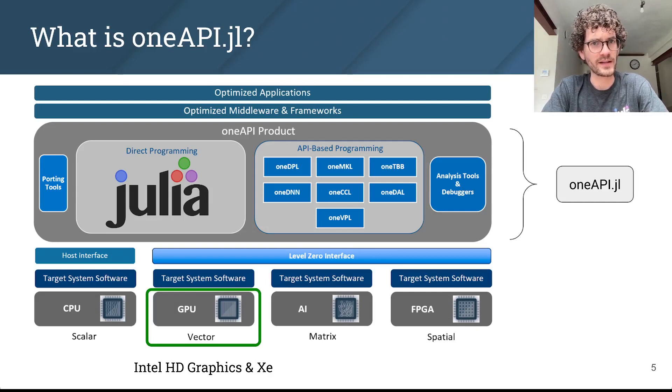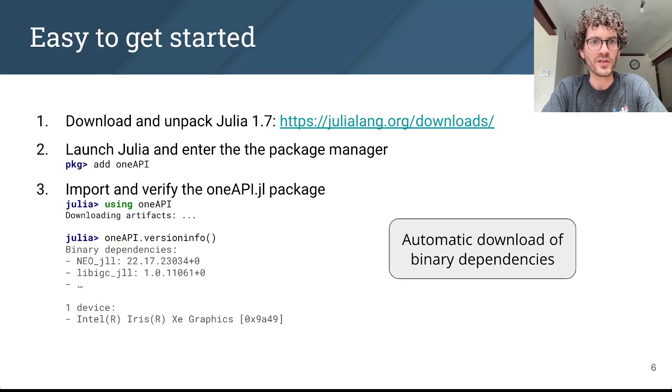For now, we're only supporting Intel GPUs. That includes integrated graphics, which most of you or many of you might have as part of your Intel CPU in your desktop or laptop. So if you do, you can easily try out oneAPI.jl by installing the latest version of Julia, entering the package manager, and installing the oneAPI.jl package.